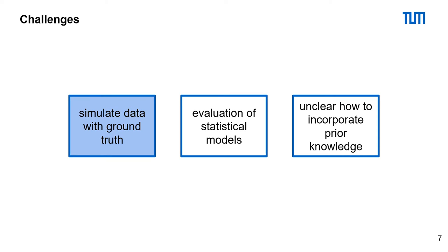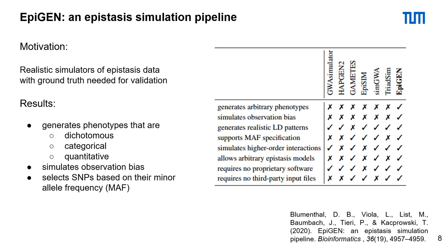Let's have a look at how we addressed the first challenge to simulate data with a ground truth. To address this challenge, we developed EPIGEN, an epistasis simulation pipeline. EPIGEN is a realistic simulator of epistasis data with ground truth, needed to evaluate existing statistical models.